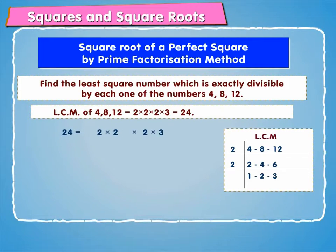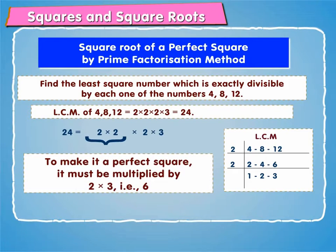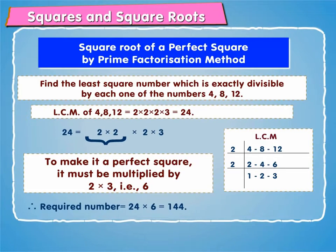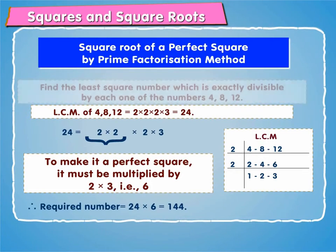But 24 is equal to 2 × 2 × 2 × 3. Here, 2 and 3 are left unpaired. To make it a perfect square, it must be multiplied by 2 × 3, that is 6. Therefore, the required number is equal to 24 × 6, which is equal to 144.